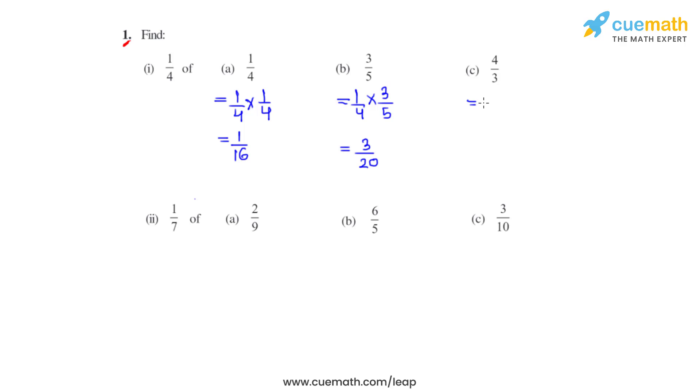Now 1/4 of 4/3 will be: Multiplying the numerator we get 4 and multiplying the denominators we get 12. Now we can further simplify it because 4 runs into 4 and 4 threes are 12, giving us 1/3.